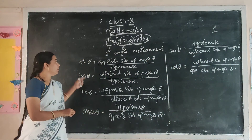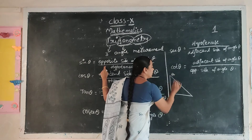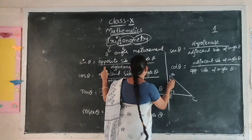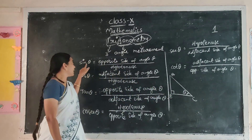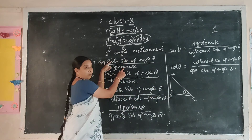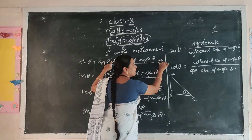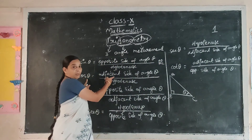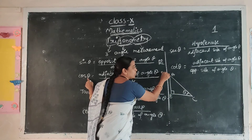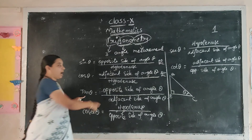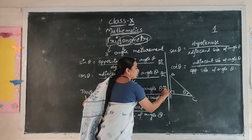These six ratios are very important. For example, take a right angle triangle A, B, C. This is the right angle. Suppose here we mark angle theta. Depends upon this theta: sine theta is opposite side of angle theta by hypotenuse — theta's opposite is AB, hypotenuse is AC — so AB by AC. Cos theta is adjacent side of angle theta by hypotenuse — theta's adjacent is BC, hypotenuse is AC — so BC by AC. Tan theta is opposite side of theta by adjacent side of theta — opposite is AB, adjacent is BC — so AB by BC.